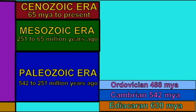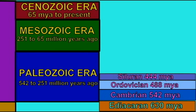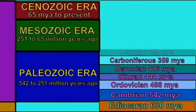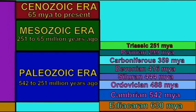We split this Phanerozoic eon into three eras: the Paleozoic, or old life; the Mesozoic, or middle life; and the Cenozoic, for more recent life.